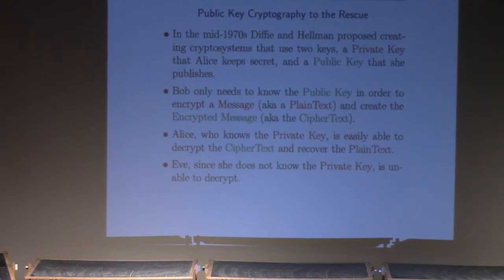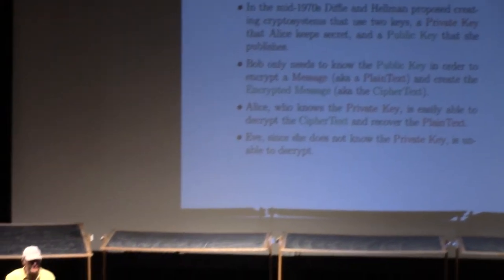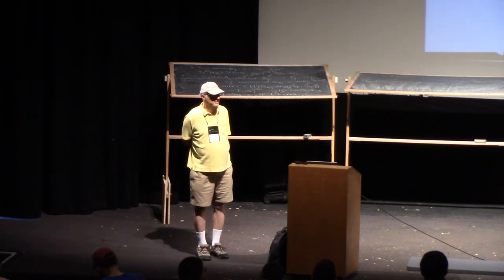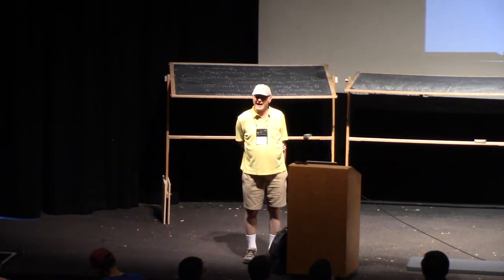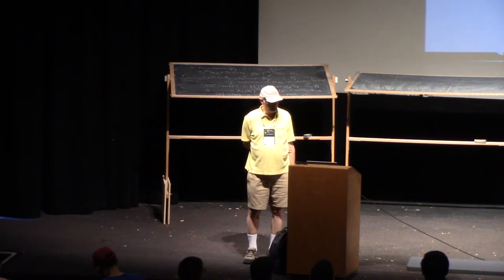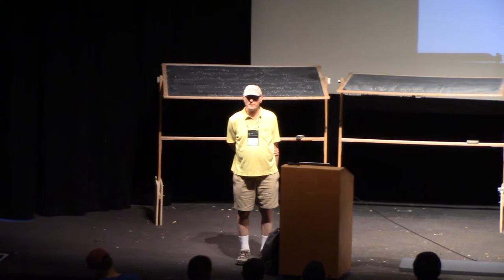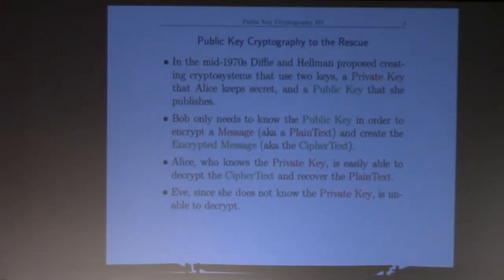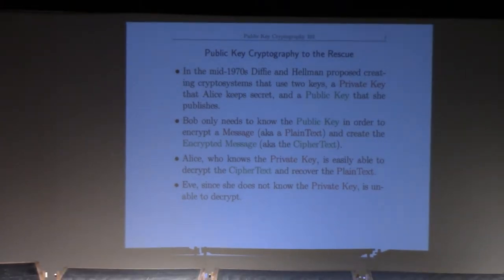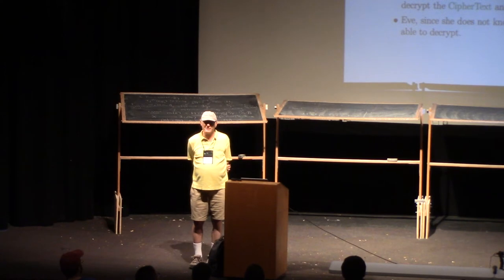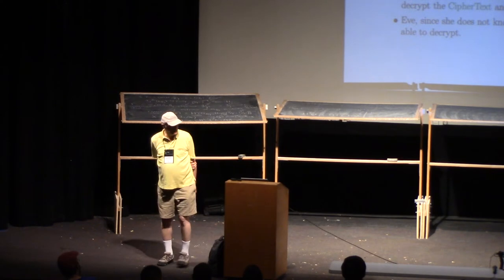At that time, Diffie and Hellman proposed creating a crypto system that didn't use a single secret key, but used two keys — one of which was literally secret, but the other of which was public: not only did Bob and Alice both know it, but Eve knows the public key also — everyone knows it. The idea was that in order to encrypt a message you only need the public key. Alice has this private key that she keeps secret and a public key that she publishes for everyone to see. Bob only needs that public key to encrypt the message, but to decrypt it you actually need to know the secret key, so only Alice can decrypt. It was really a breakthrough idea that this might even be possible.